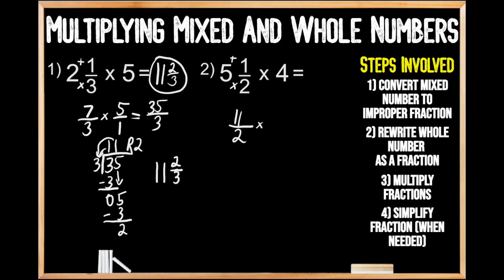Now we're going to move on to step number two, where we rewrite our whole number as a fraction. Just like in the first problem, we make our numerator four and give the denominator a value of one. Then in step number three, we multiply the fractions: 11 times four gives us 44 for our numerators, and one times two gives us two for our denominators.